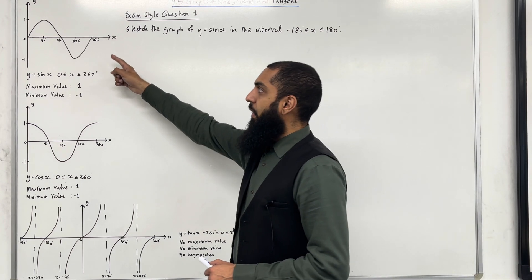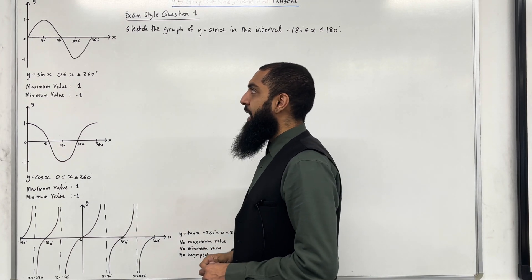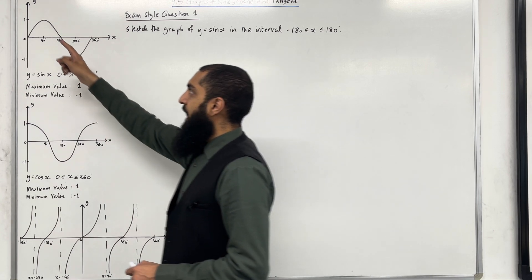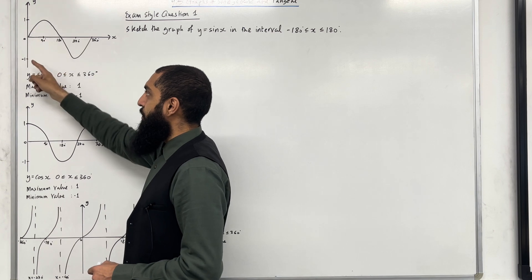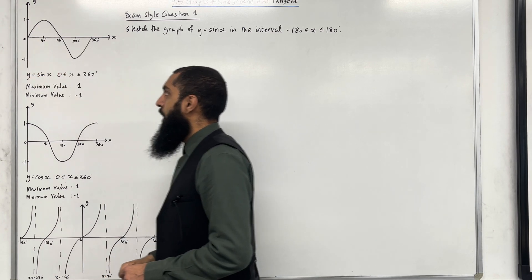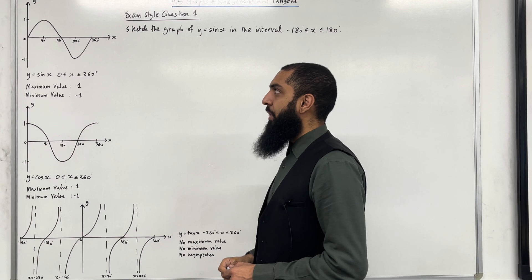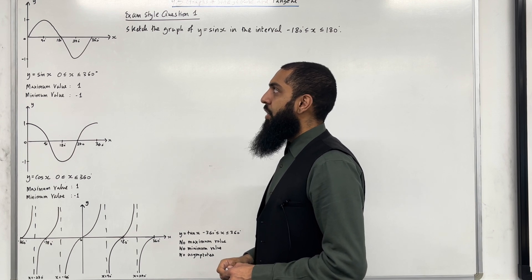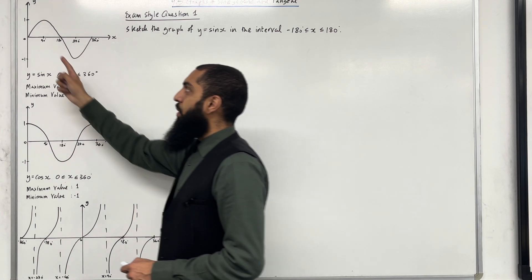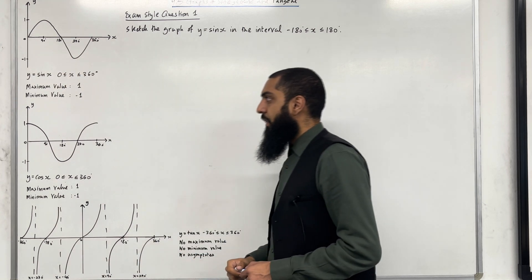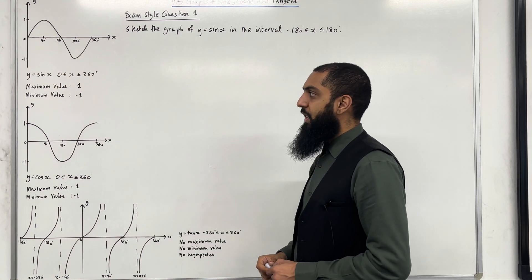Over here I've drawn the graph of y equals sine x for x between 0 degrees and 360 degrees inclusive. The maximum value of the graph is 1 and the minimum value is minus 1. The graph of y equals sine x is symmetrical and it is also periodic — this means that it repeats itself every 360 degrees.